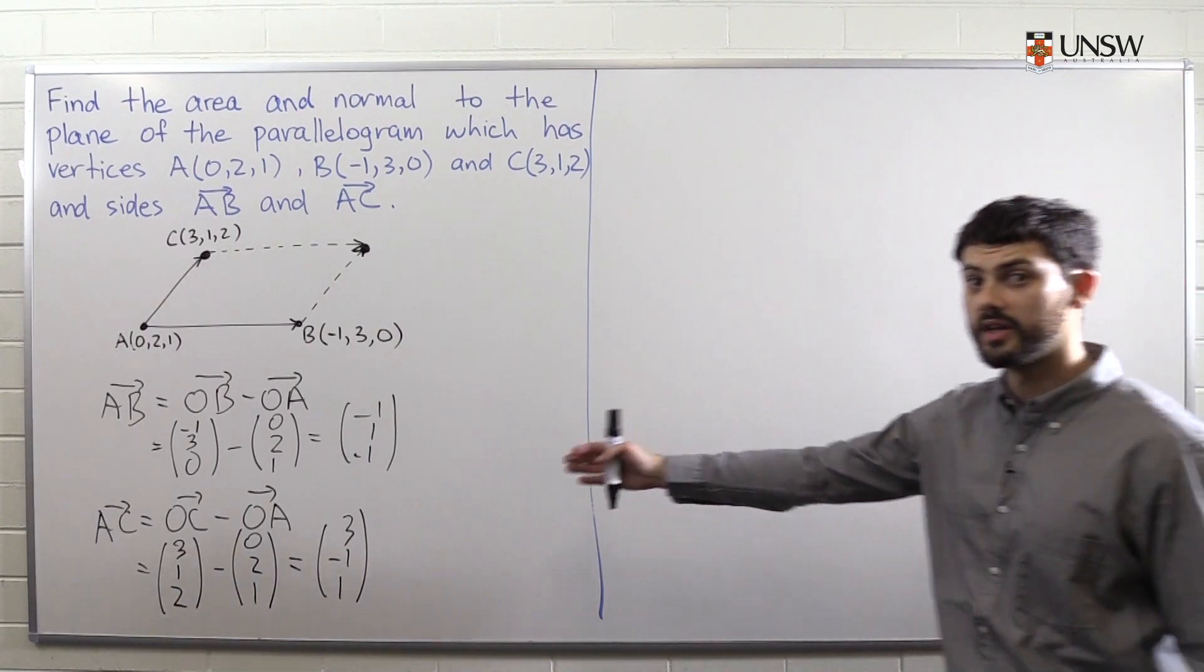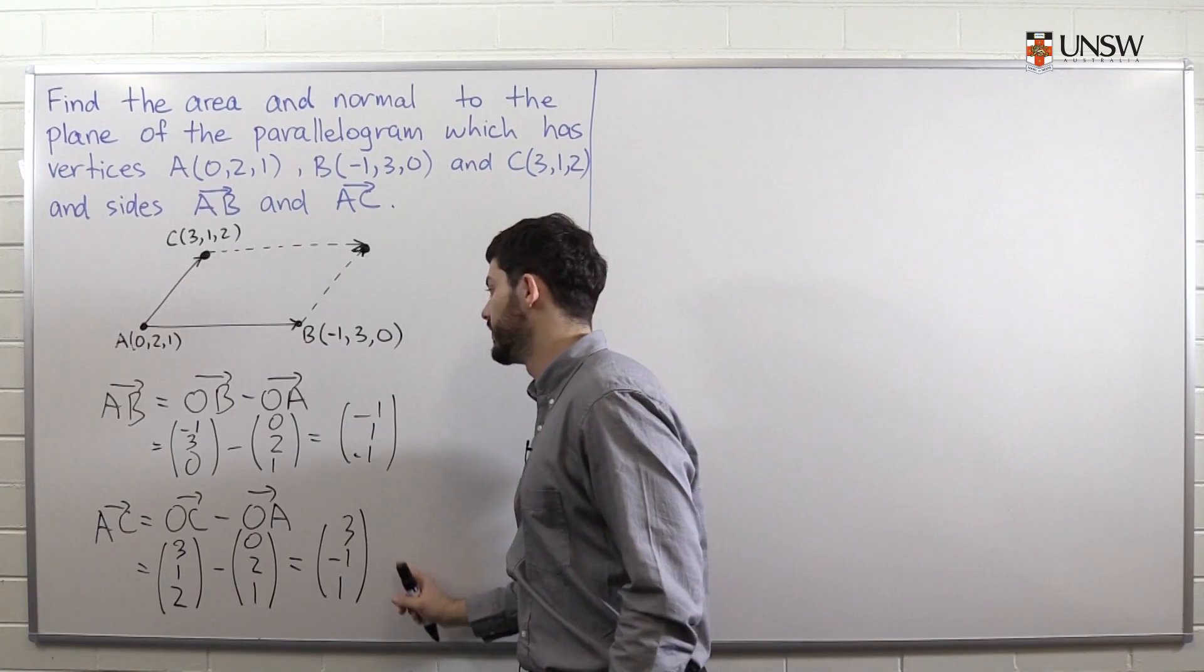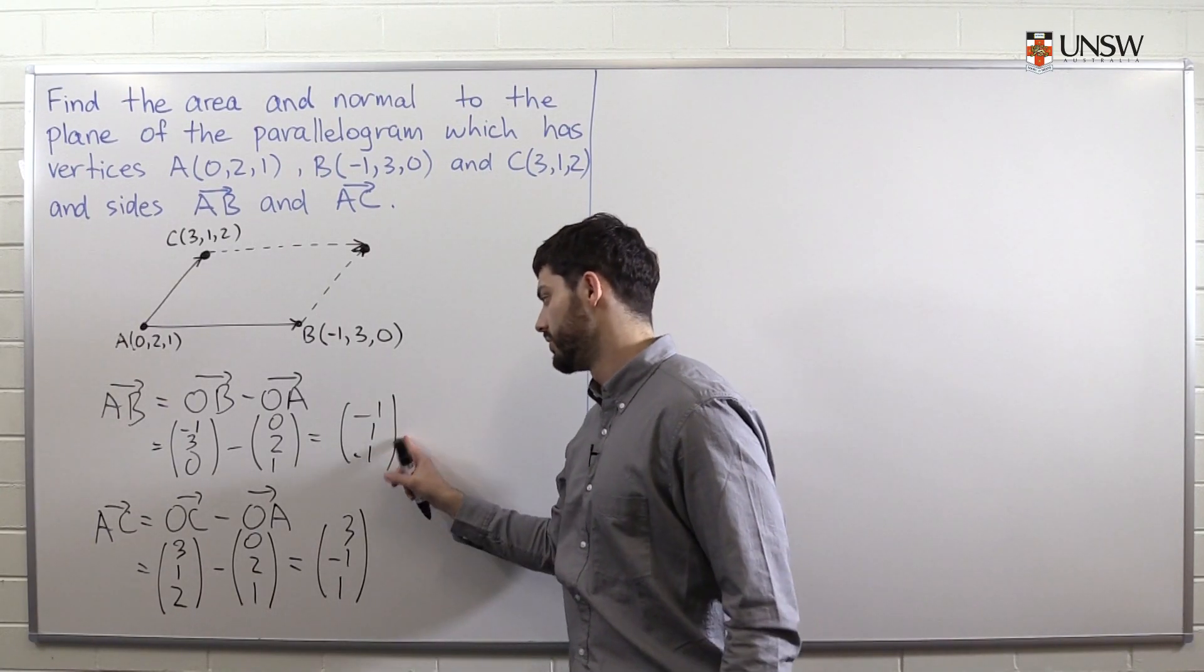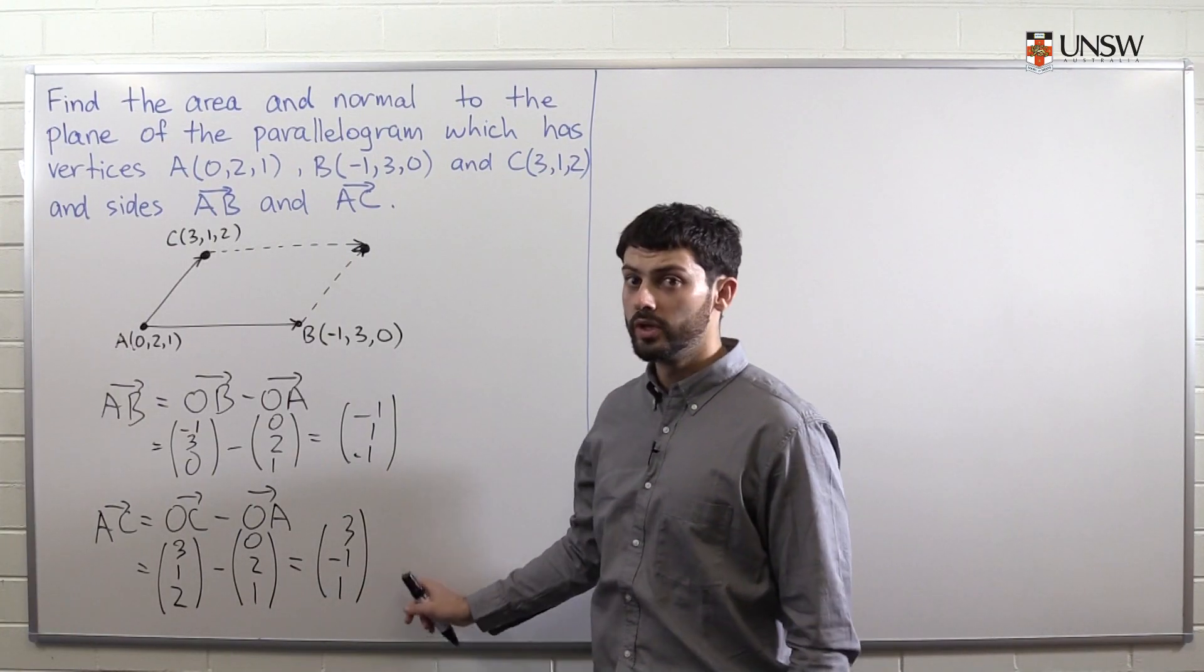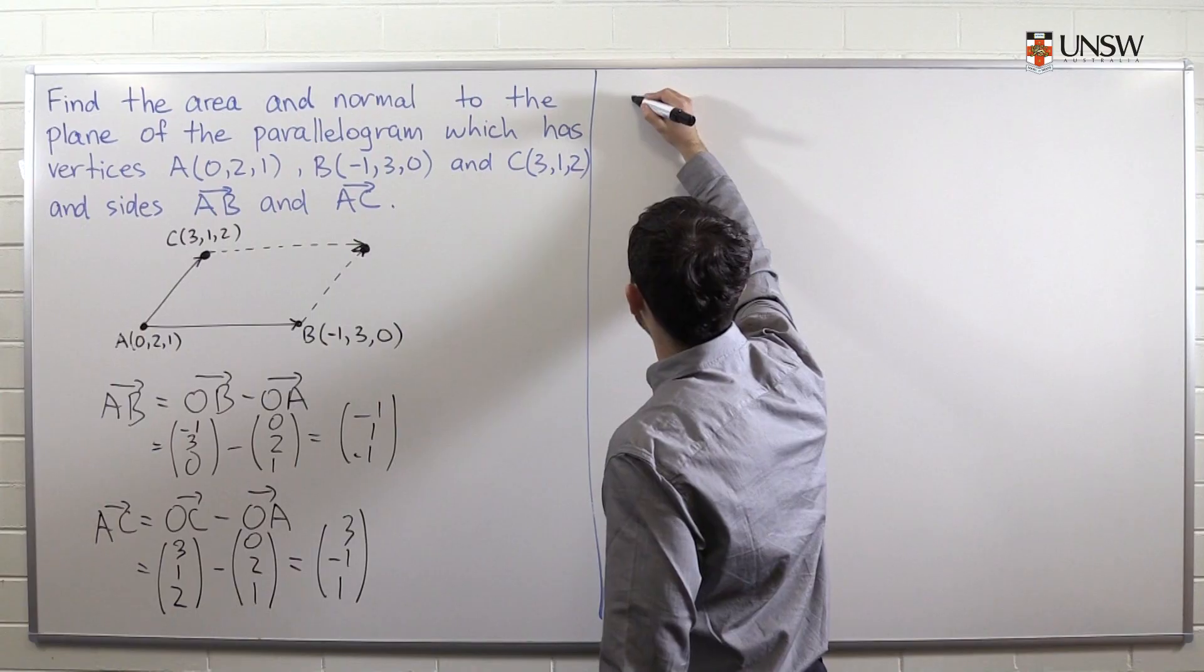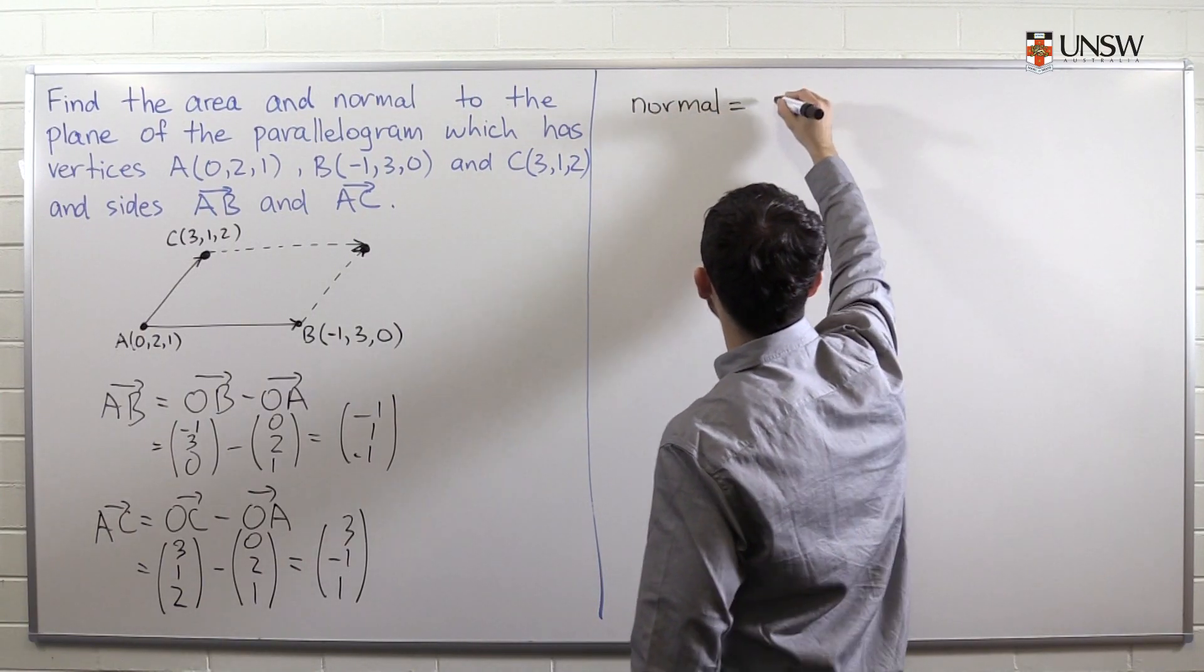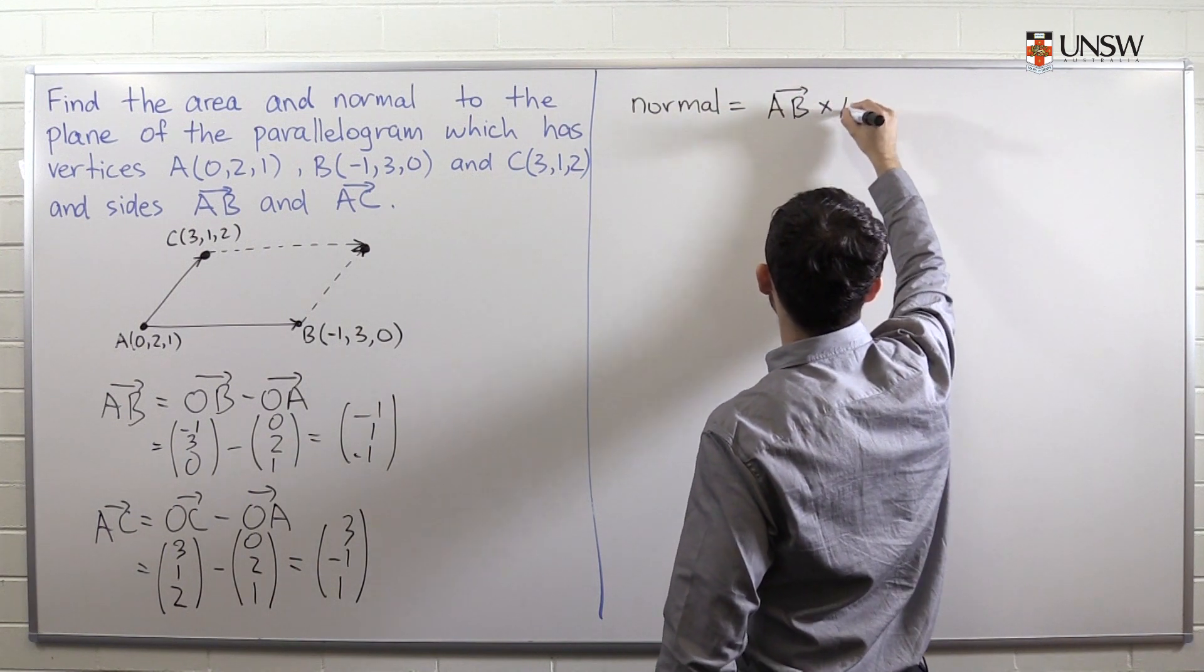Okay. So now we need to find the normal to these two vectors. And I remind you that the normal to two vectors is a third vector, which is going to be perpendicular to both this vector and this one. And the procedure we use to find the normal is called the cross product. So what we need to do is find the cross product of the vector AB with AC.